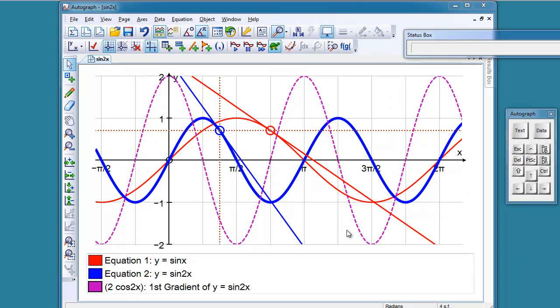This is a short video about using Autograph to have a look at the chain rule and how it applies to the function y equals sine 2x. This page here is how it all finishes up and it's a bit complicated to look at all in one go.